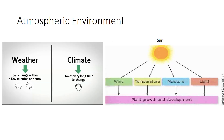Climate and weather, although linked, are not the same. Weather is the combined effect of complex interactions among temperature, rainfall, wind, light, and relative humidity in a specific location. Weather factors have changing patterns on a daily, weekly, monthly, and yearly basis. The same weather pattern year after year is the climate. The sun influences atmospheric conditions including temperature, moisture, light, and wind. These conditions in turn affect plant growth.